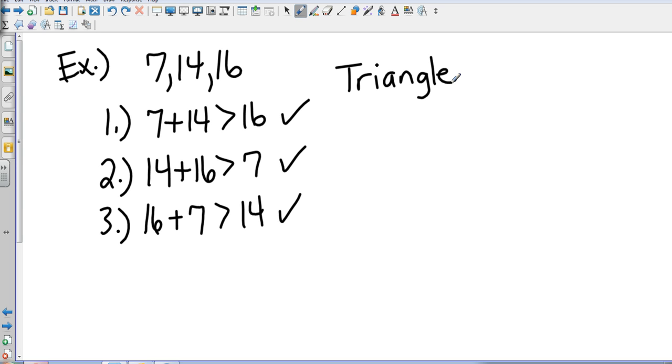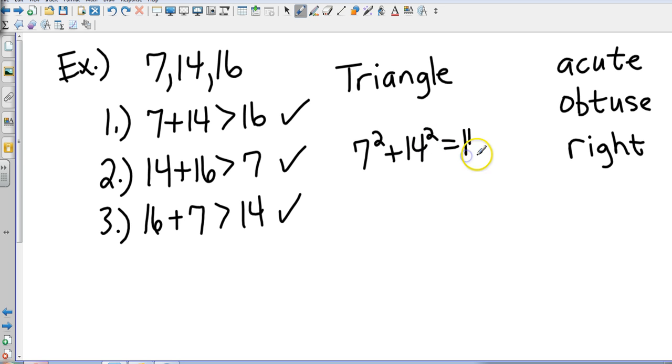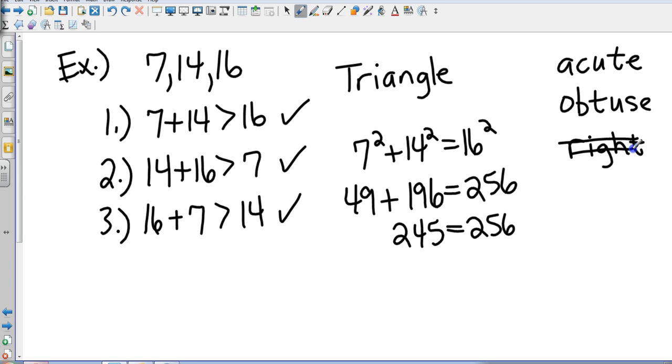OK so now we have to classify it and the easiest to find out would be if it's a right triangle. So we want to know if it's acute, we want to know if it's obtuse, or is it a right triangle. So let's go right at it with the Pythagorean theorem if it's a right triangle. So if it's a right triangle then this will be true. So we've got 49 plus 196, is that going to equal 256? And that is not true because 245 does not equal 256. So we know it's not a right triangle.